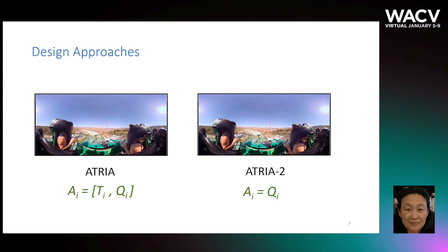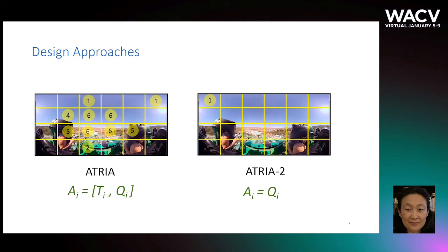In designing the reinforcement learning agent, we consider two different approaches. First, the agent selects the tile and tile quality to download. Or, the order of tile selection is fixed and the agent selects the tile quality to download.